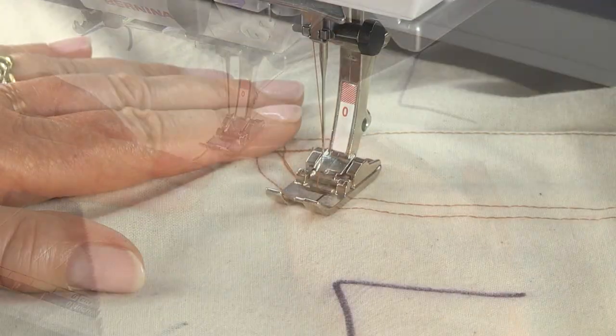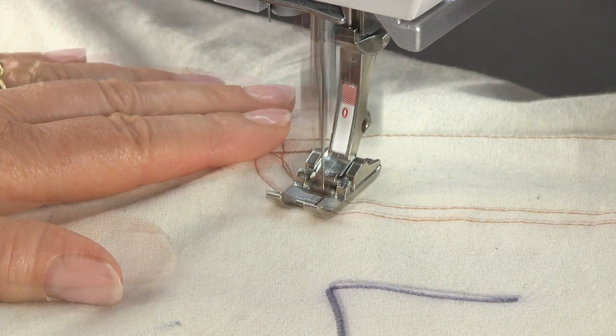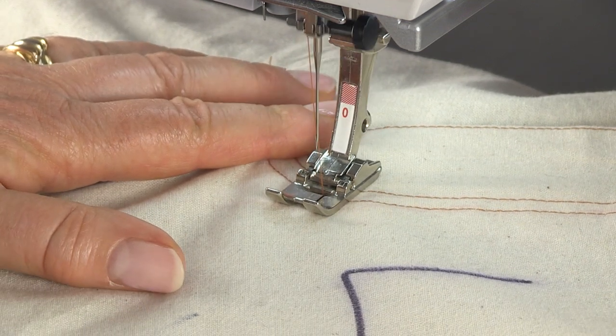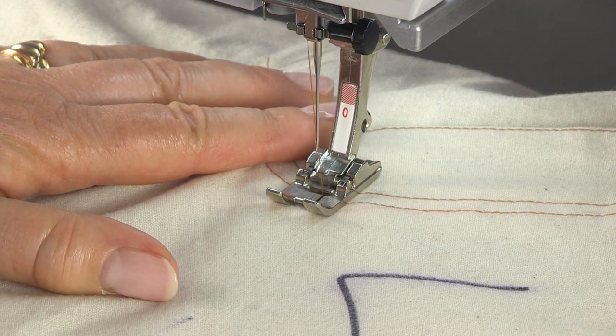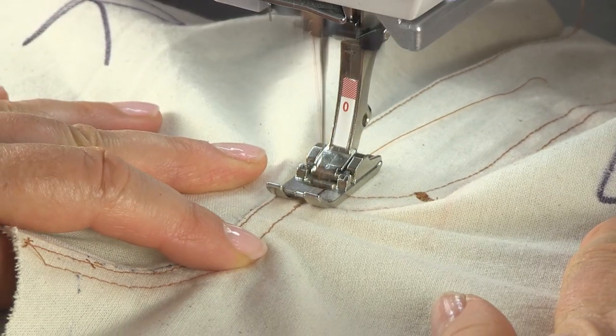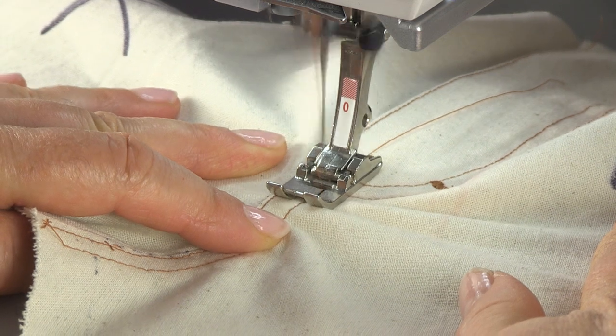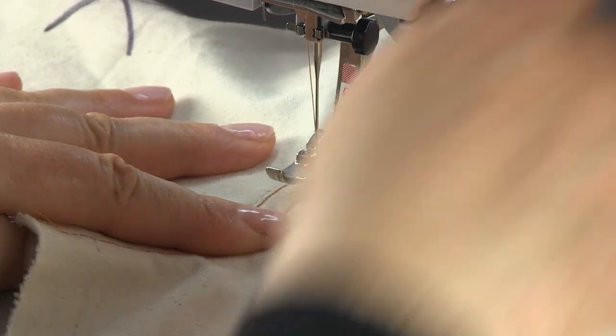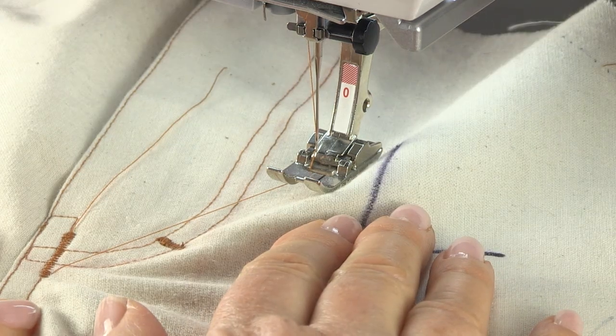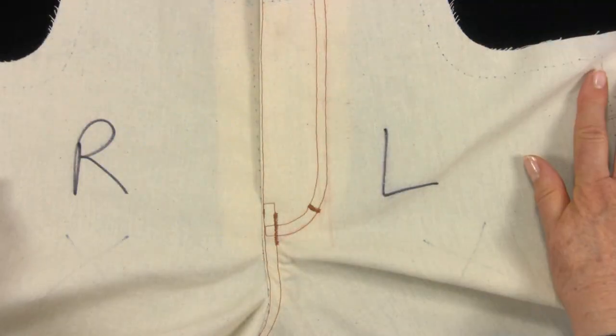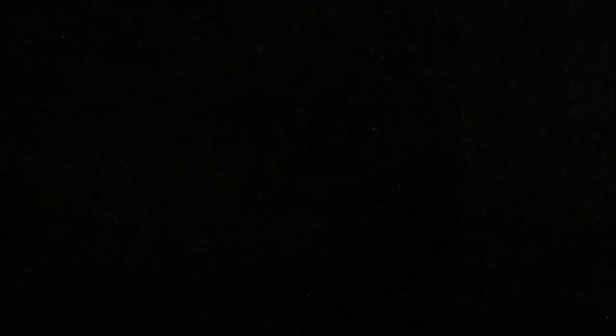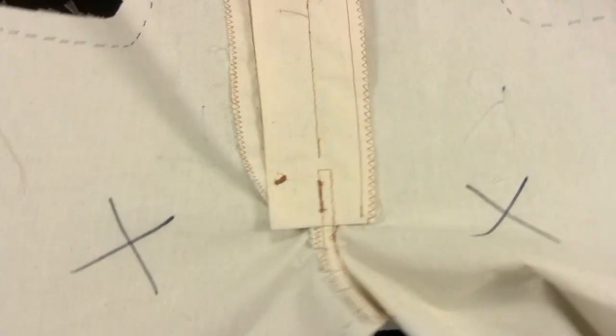Machine a bar tack or two which secures the flyguard in place. You can do these bar tacks in all sorts of ways. Just create a look you like. The bar tacks keep the zip guard in place. They are not just for decoration.